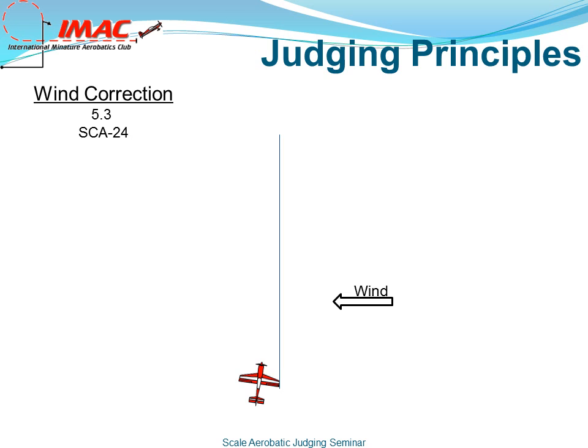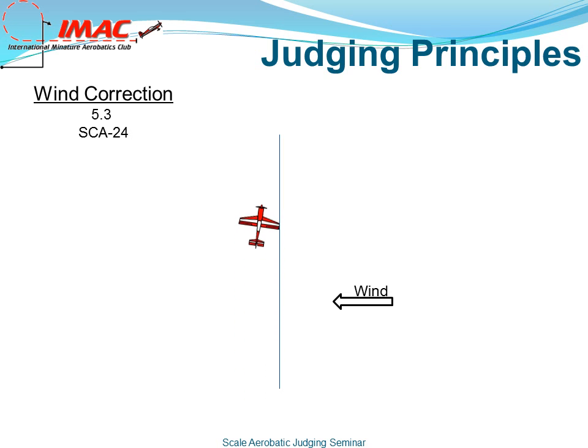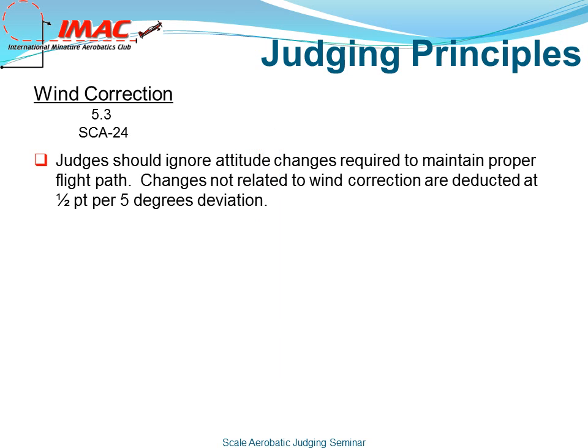In this illustration, we see the yaw attitude being used to maintain a perfect vertical upline. Judges should ignore attitude changes required to maintain proper flight path. Changes not related to wind correction are deducted at half a point per 5 degrees of deviation.